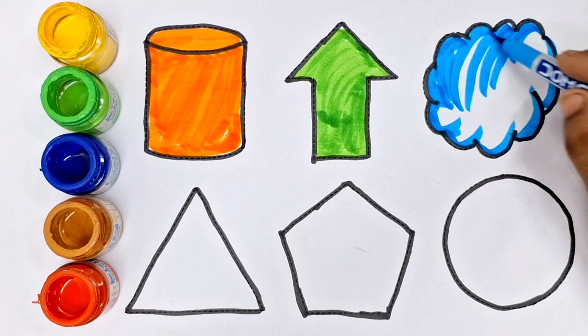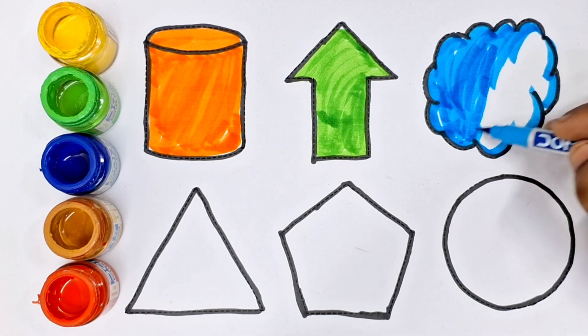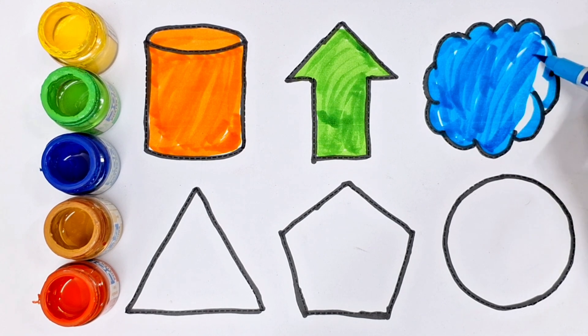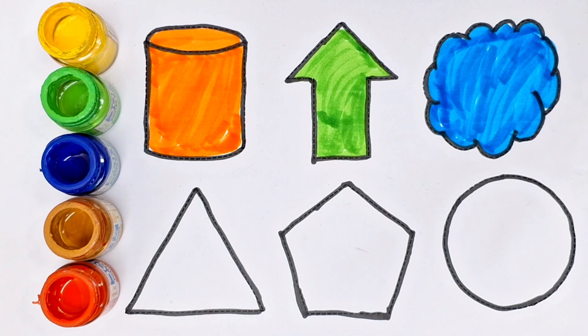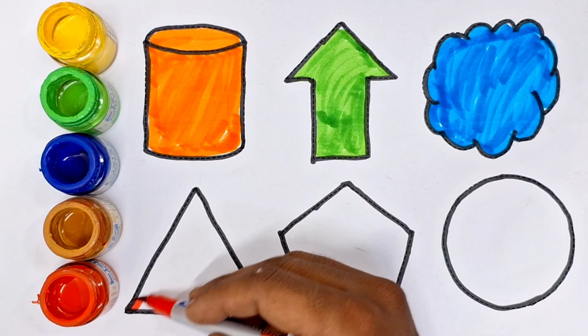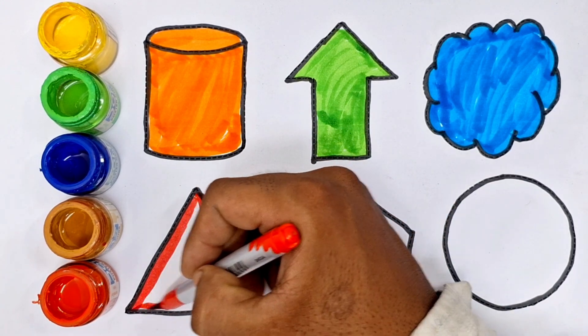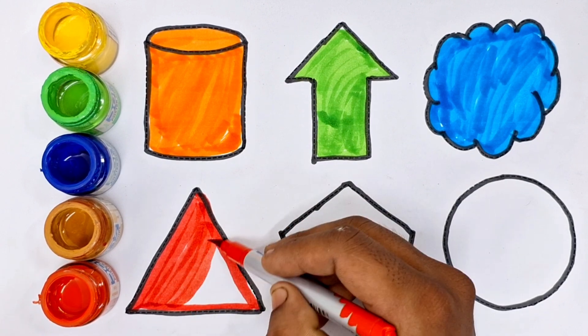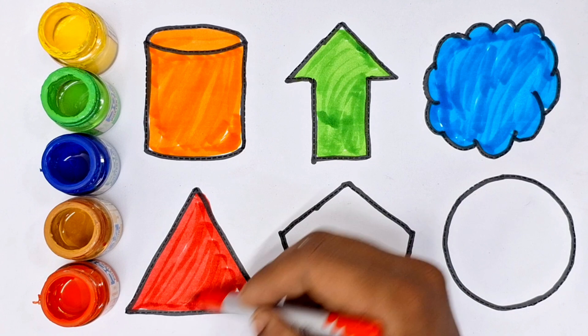What do you do? Cloud. Cloud. Red. Triangle.